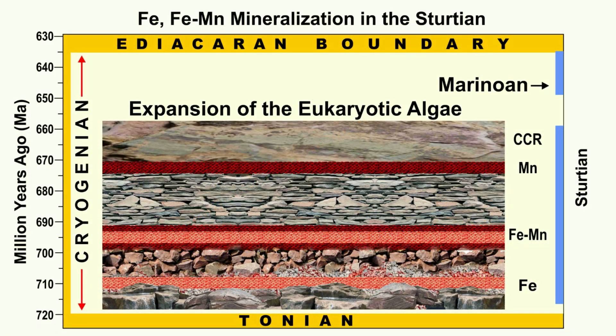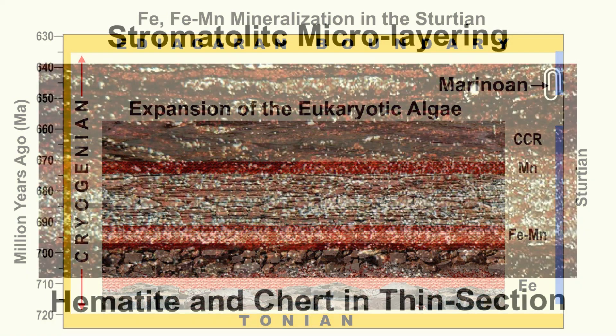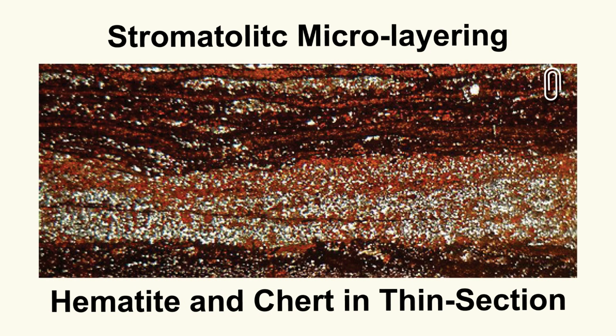The geochemist has always wondered why this interlayering of oxides of iron, manganese and silica — visible on all scales, say field scale, hand specimen scale and microscopic scale — shows such extensive geometrical congruency of spaces only in the Precambrian iron formations.